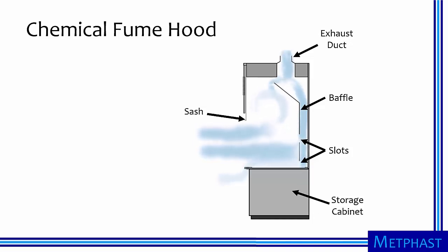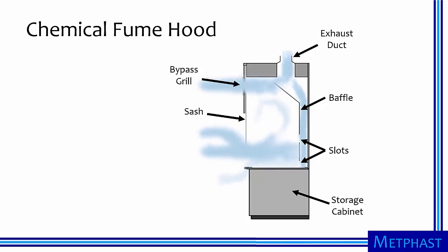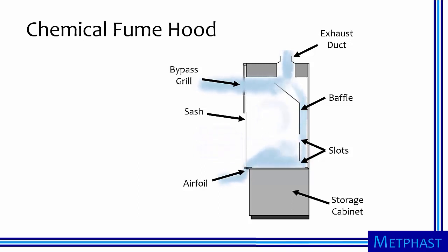When the sash is fully up, most of the air enters through the hood face. When in the middle position, some air passes through a bypass grill, the hood face, and an airfoil. Finally, when the sash is in the lowest position, air enters the hood from the bypass grill and airfoil only. These different arrangements facilitate good capture for a range of different situations.